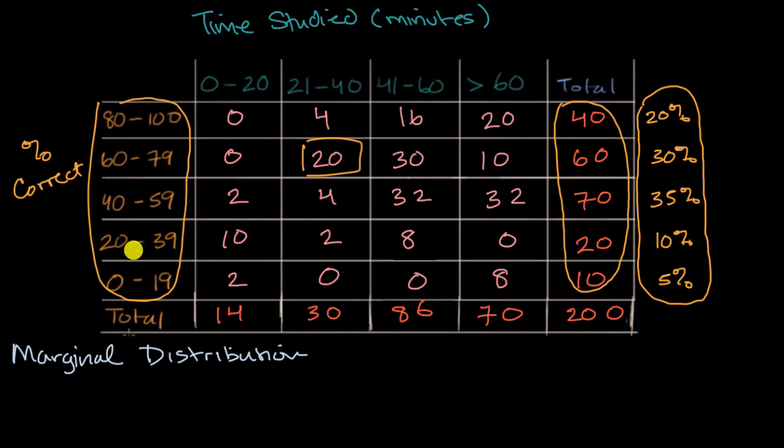Now you could also think about marginal distributions the other way. You could think about the marginal distribution for the time studied in the class. And so then you would look at these counts right over here. You'd say a total of 14 students studied between zero and 20 minutes. You're not thinking about the percent correct anymore. A total of 30 studied between 21 and 40 minutes.